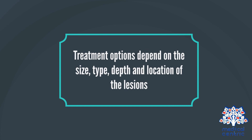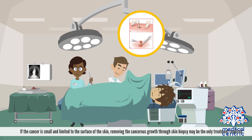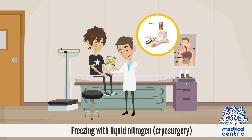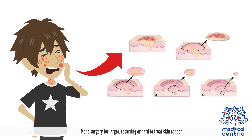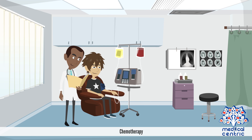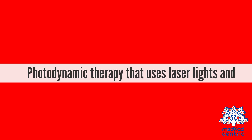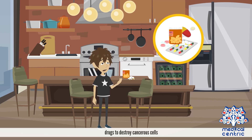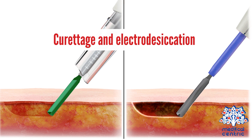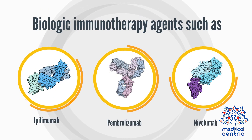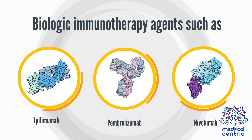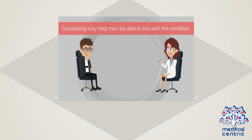Treatment options depend on the size, type, depth, and location of the lesions. If the cancer is small and limited to the surface of the skin, removing the cancerous growth through skin biopsy may be the only treatment required. If additional treatment is needed, options include: freezing with liquid nitrogen (cryosurgery), excisional surgery, Mohs surgery for larger, recurring, or hard-to-treat skin cancers, chemotherapy, radiation therapy, photodynamic therapy using laser lights and drugs to destroy cancerous cells, curettage and electrodesiccation, and biologic immunotherapy for melanomas using agents such as ipilimumab, pembrolizumab, and nivolumab.